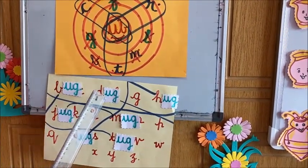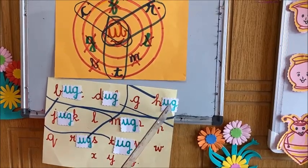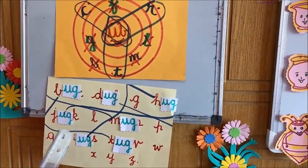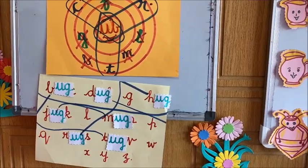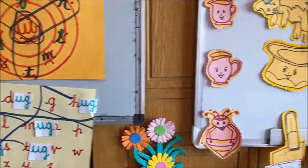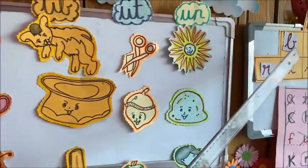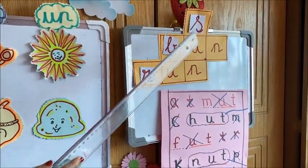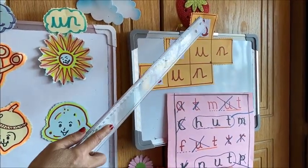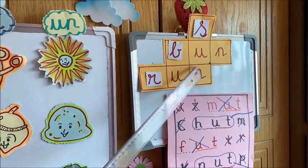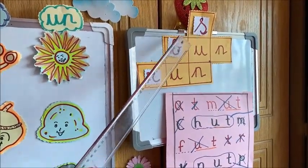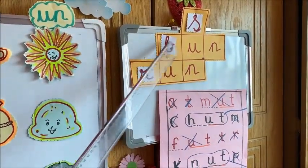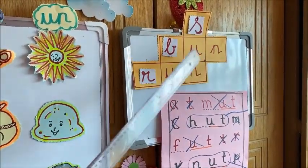So we got bug, dug, hug, mug, jug, rug, and tug. Then here we have this puzzle where from the mushroom we got these three letters: S, B, and R. With that we made Run, Bun, and Sun.